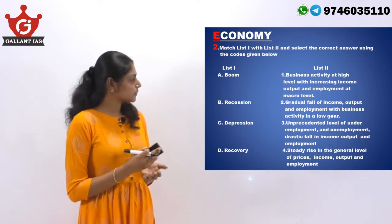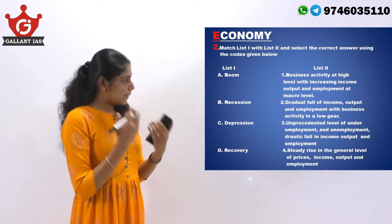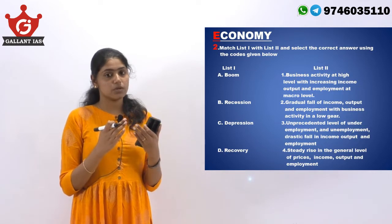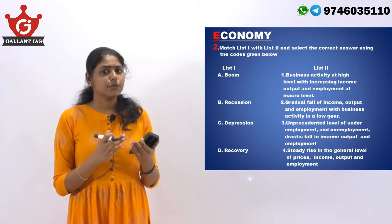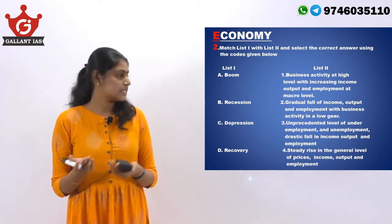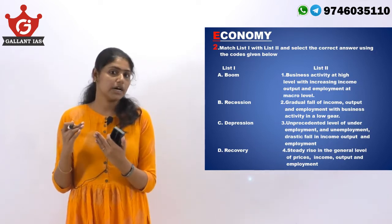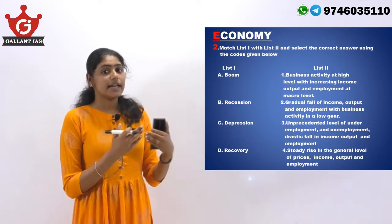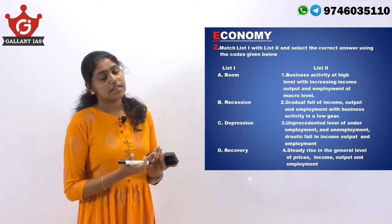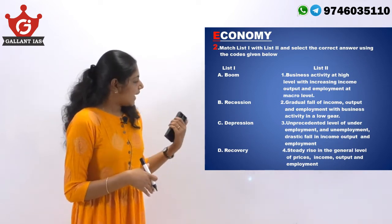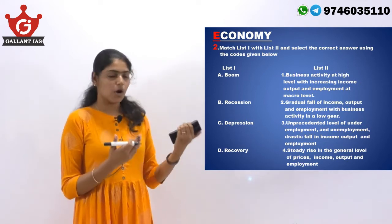The second term is recession. Recession is actually the fall of income, employment rate, output and business activity at a gradual pace — meaning it goes on for a few months, two or three months. Depression is an extreme form or phase of recession which can last for two or three years where the economic activity is in a very severe downturn. Recovery is the steady rise in the general level of prices, income, output and employment.